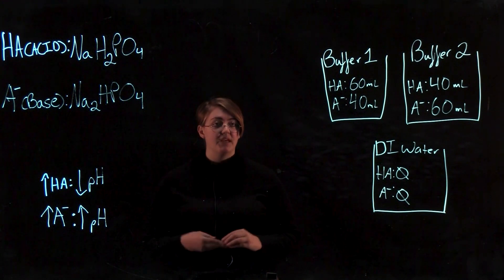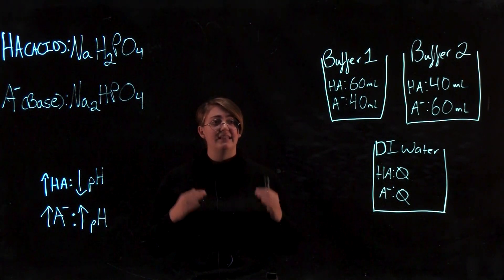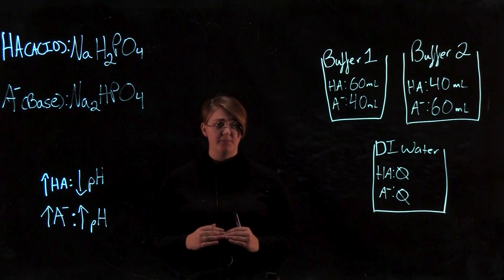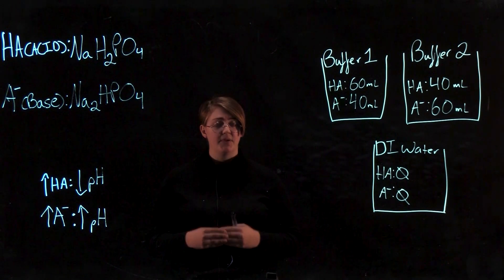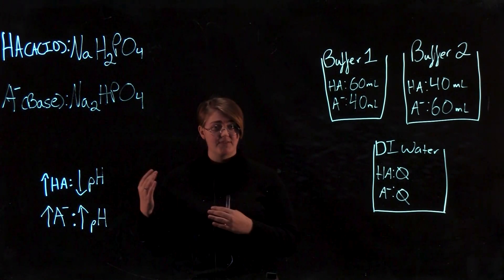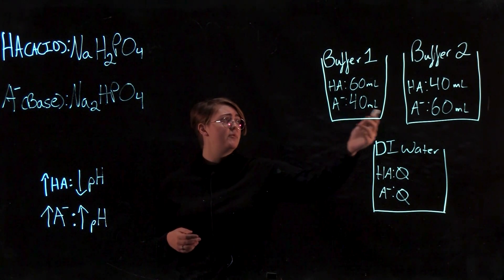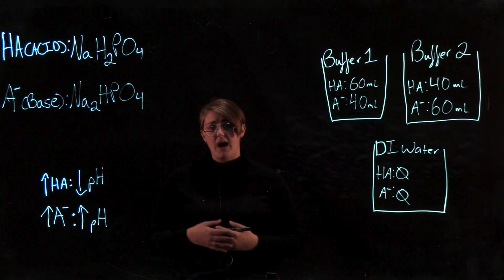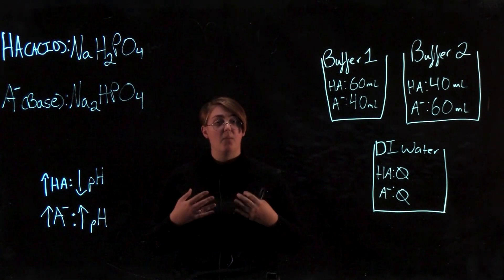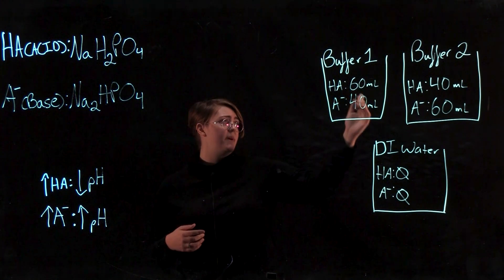Our first question is, you'll likely notice that one of your two buffer solutions had a lower pH than the other. Which one, and why would its pH have been lower? Hopefully in your observations in lab, you noticed that one of your buffers, between buffer 1 and buffer 2, had a difference in pH. To think about which one had a lower pH and why, we need to look at what was in each of our buffers.